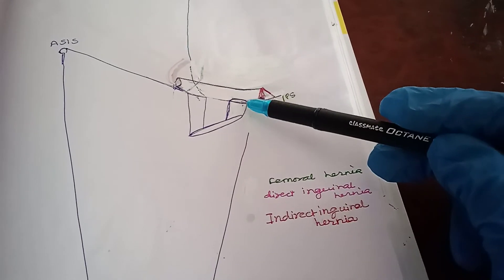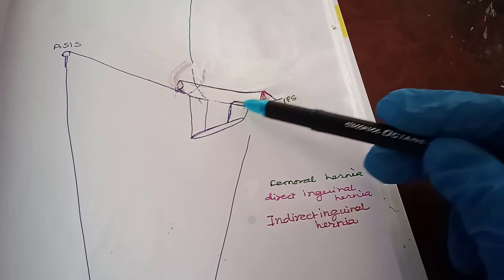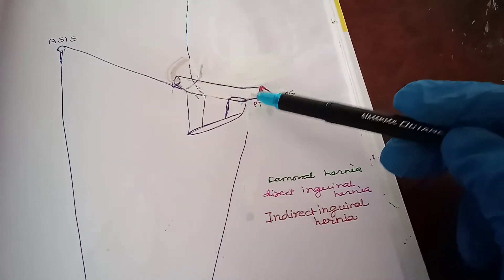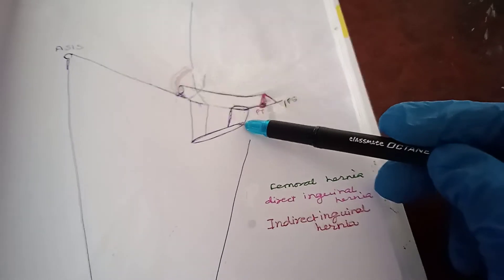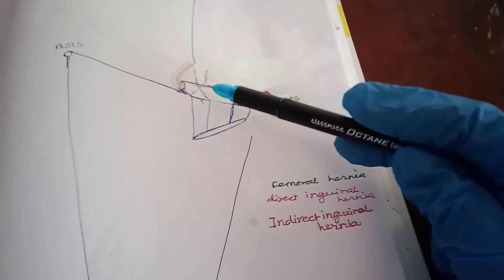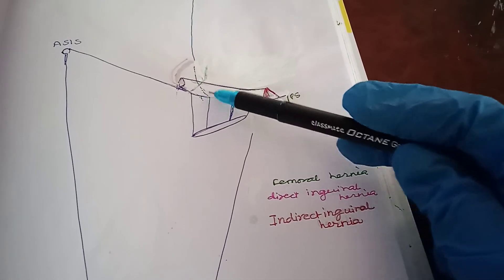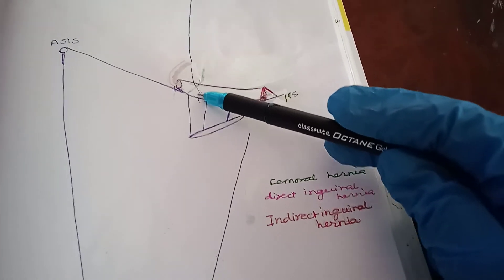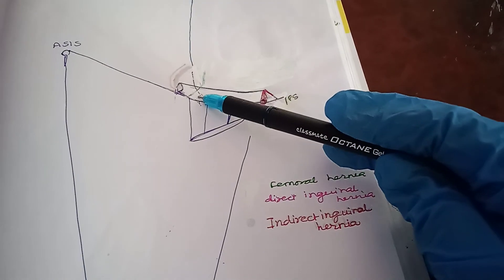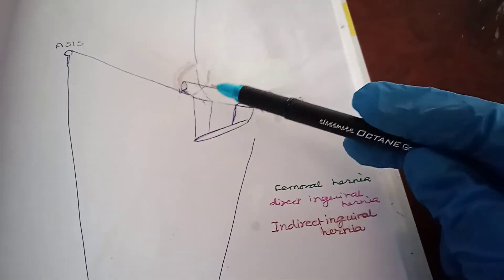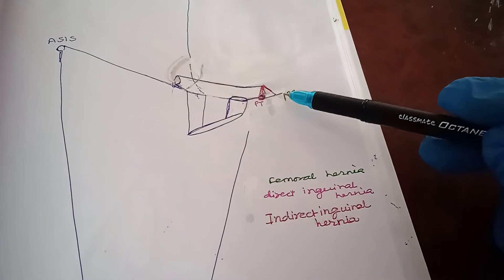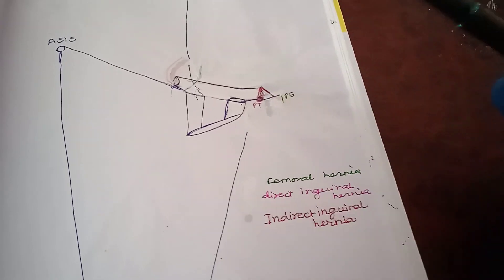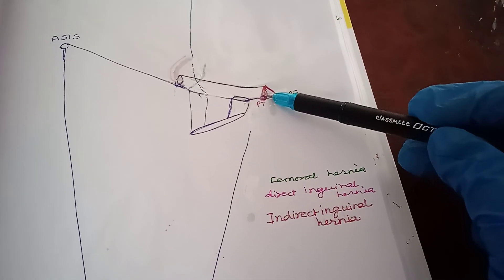After reduction, if pulsation is felt inferior and lateral then it is femoral hernia; if superior and lateral through Hesselbach's triangle then it is direct inguinal hernia; and if superior and medial then it is indirect inguinal hernia.